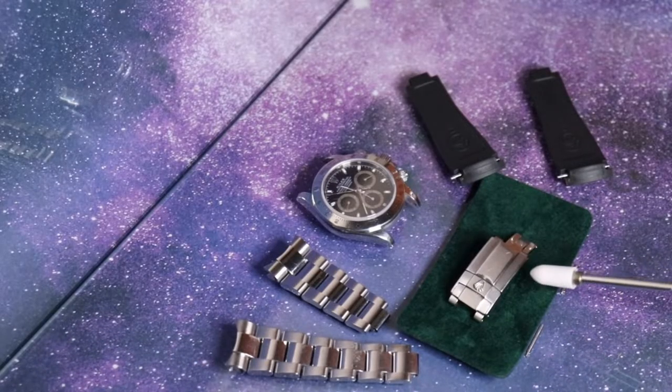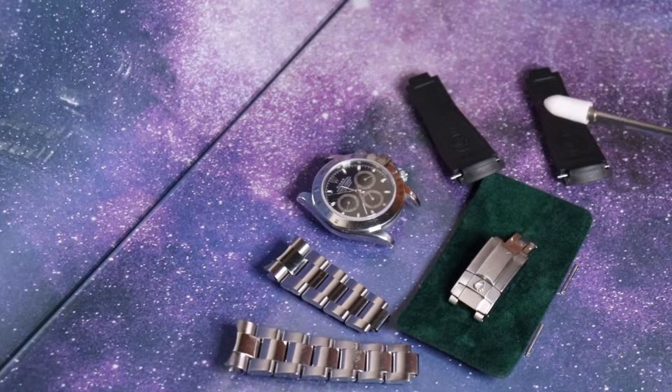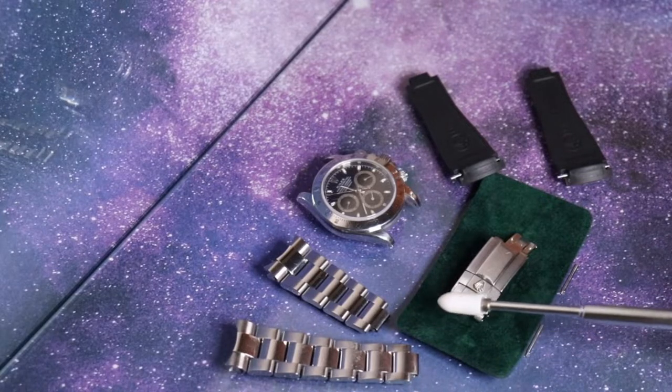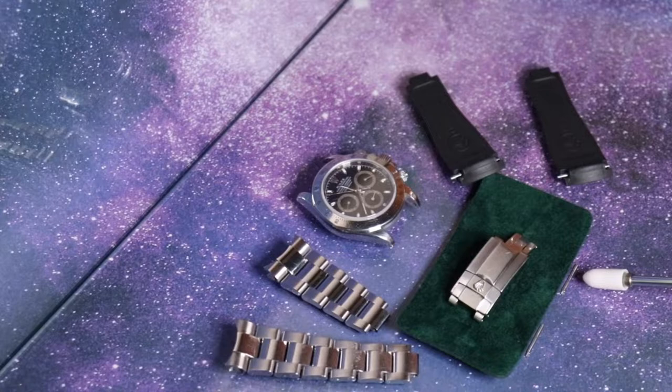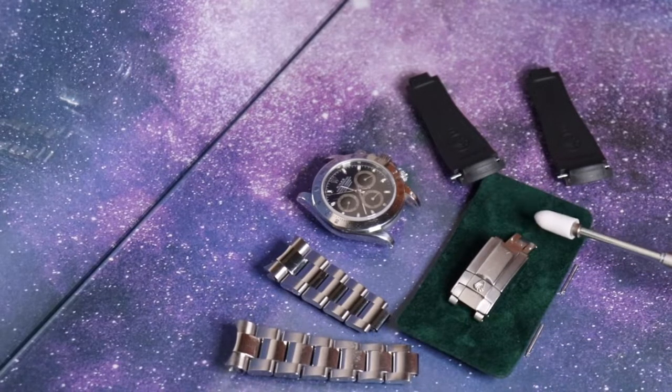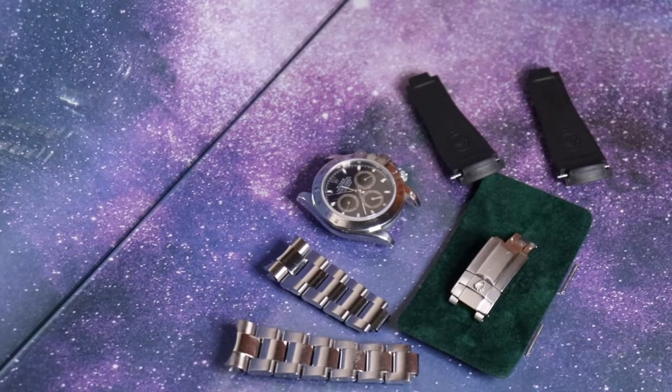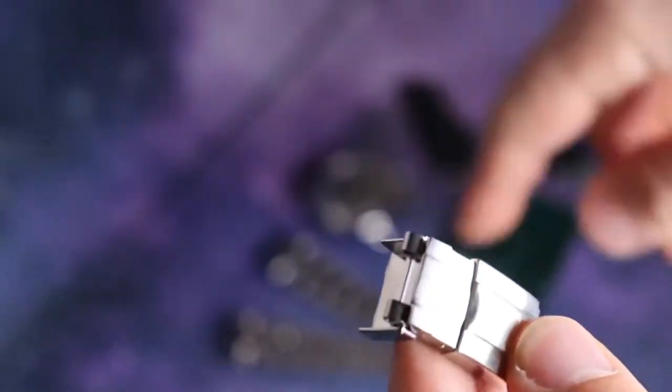After dismantling the clasp from the six o'clock and 12 o'clock elements from the rubber, this is the six o'clock position screw for the six o'clock element. And this here is the 12 o'clock position screw for the 12 o'clock element for the clasp.